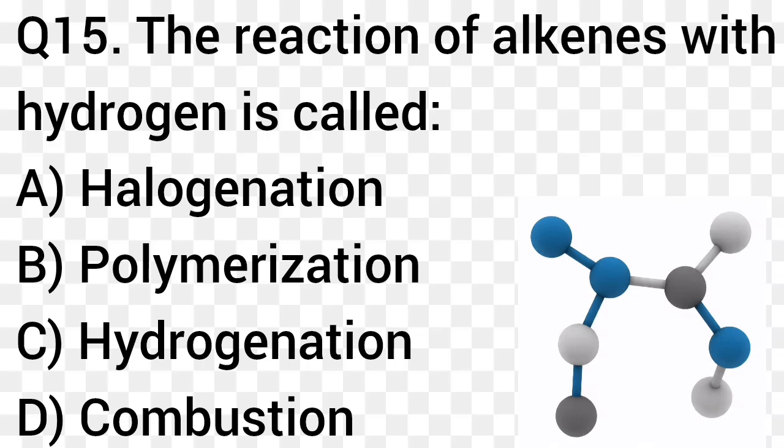Question number 15. The reaction of alkynes with hydrogen is called: Option A: Halogenation. Option B: Polymerization. Option C: Hydrogenation. Option D: Combustion. The right answer is option C, Hydrogenation.